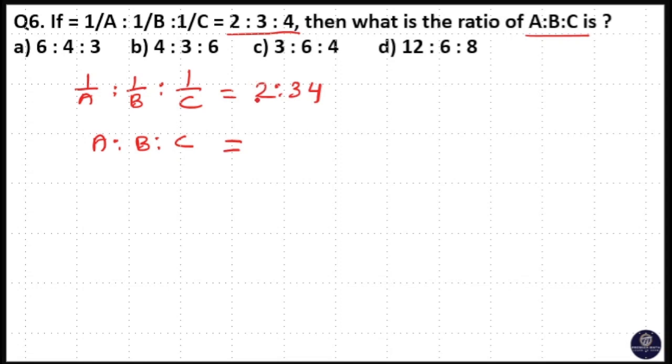to find A:B:C, multiply the reciprocal ratio like this. To find A, you need to multiply 3 and 4. So 3 × 4 = 12 is A.